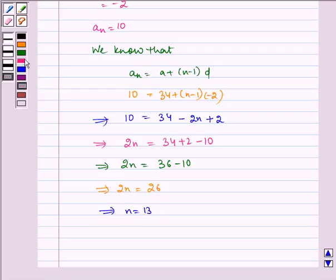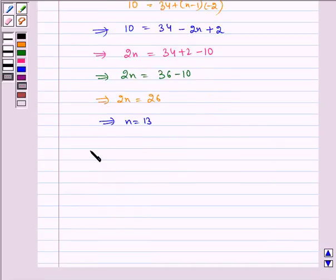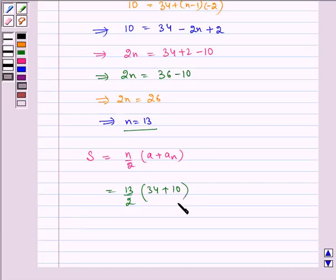Now we will find the value of sum. Sum is equal to N by 2 multiplied by A plus An. N we have taken out to be 13, so 13 by 2, A is 34, plus An is 10 as the nth term is 10.